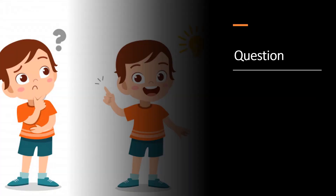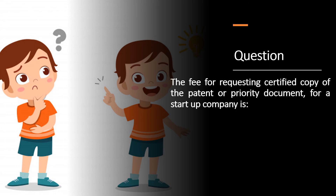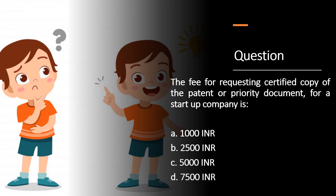That's all about priority document and DAS Code — I hope this topic is clear to you now. Time for the question of the day: the fees for preparation of a certified copy of priority document for a startup company is — Option A: 1,000 rupees, Option B: 2,500 rupees, Option C: 5,000 rupees, Option D: 7,500 rupees. You can put your answer in the comment section below.